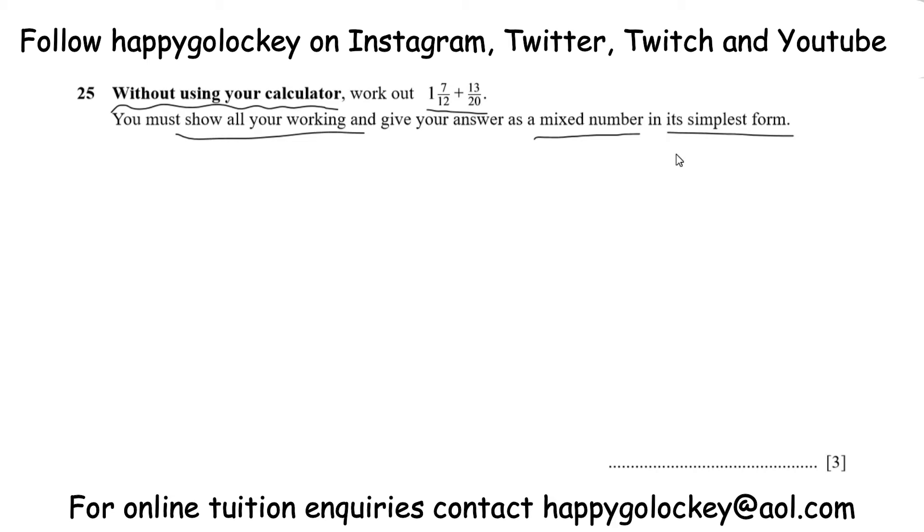So the first thing is, we're going to have 1 anyway, and then focus on the fraction part of it. So 7 twelfths plus 13 twentieths.